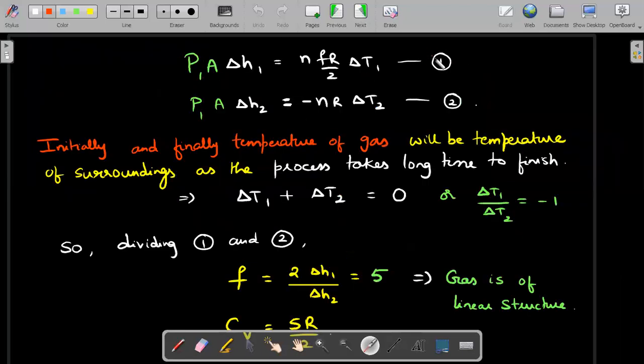Let's bring the first and second equations together. Initially and finally, the temperature of gas will be the temperature of surroundings. The sum of changes that happened in the first process, an increase, and a decrease in the second process should equal zero. The ratio delta H2 to delta H1 is what I'll use now to eliminate this. I divide the two equations, cancel delta T1 and delta T2 with the minus sign, leaving only the ratio of delta H1 and H2.